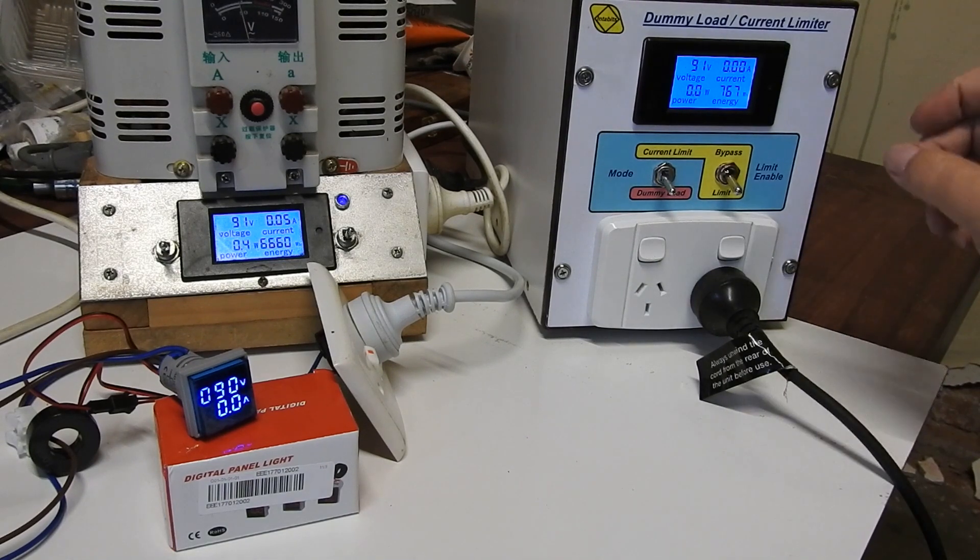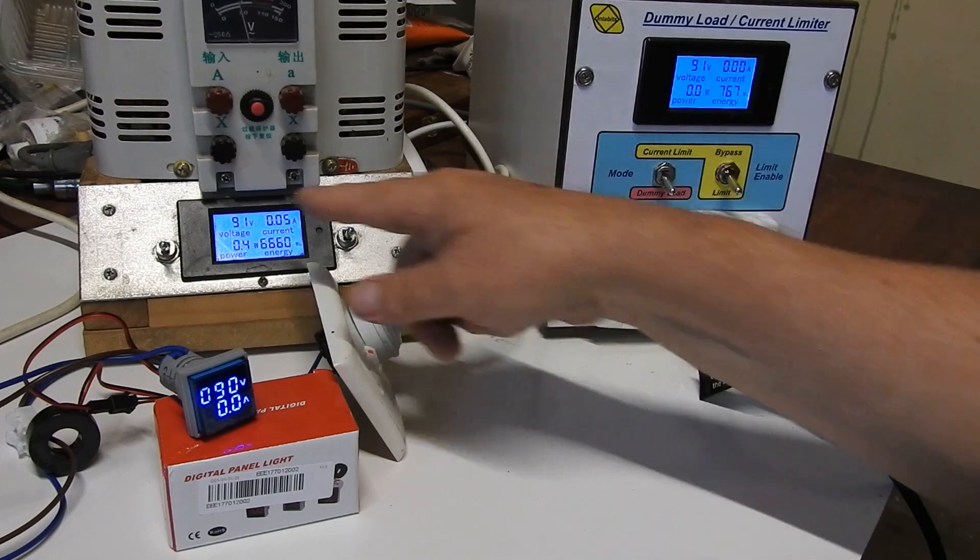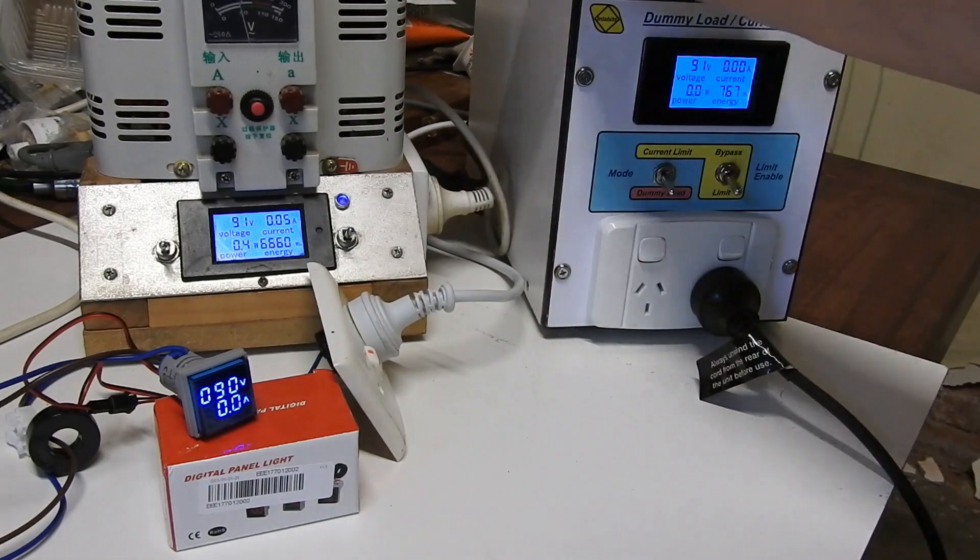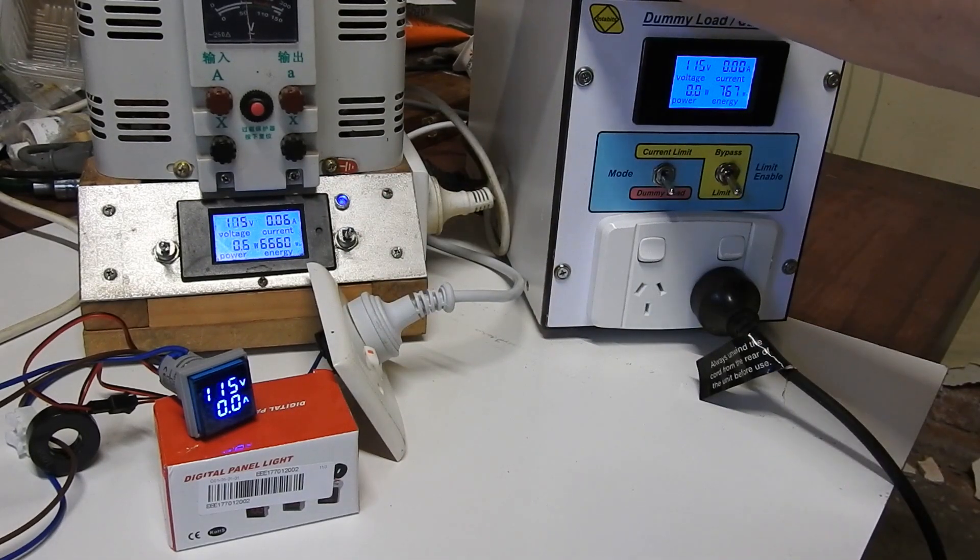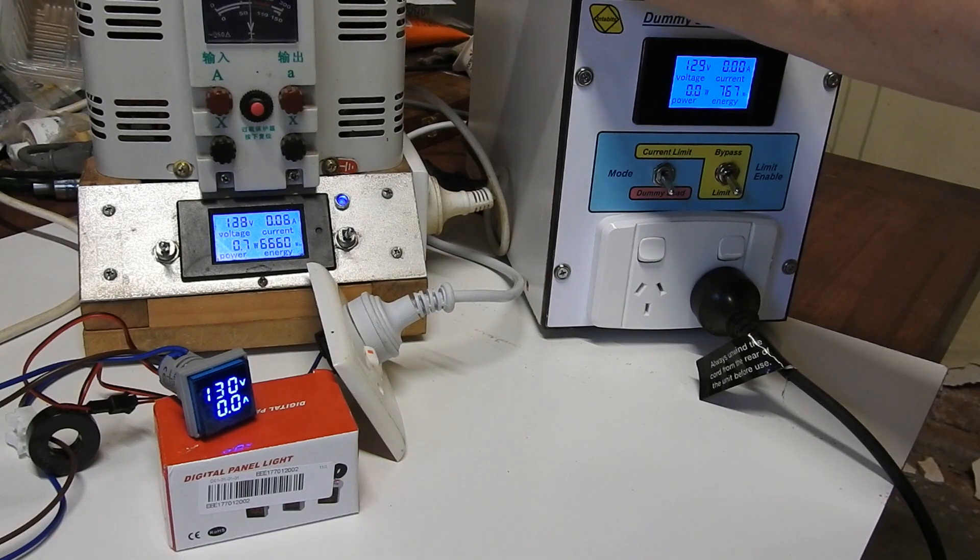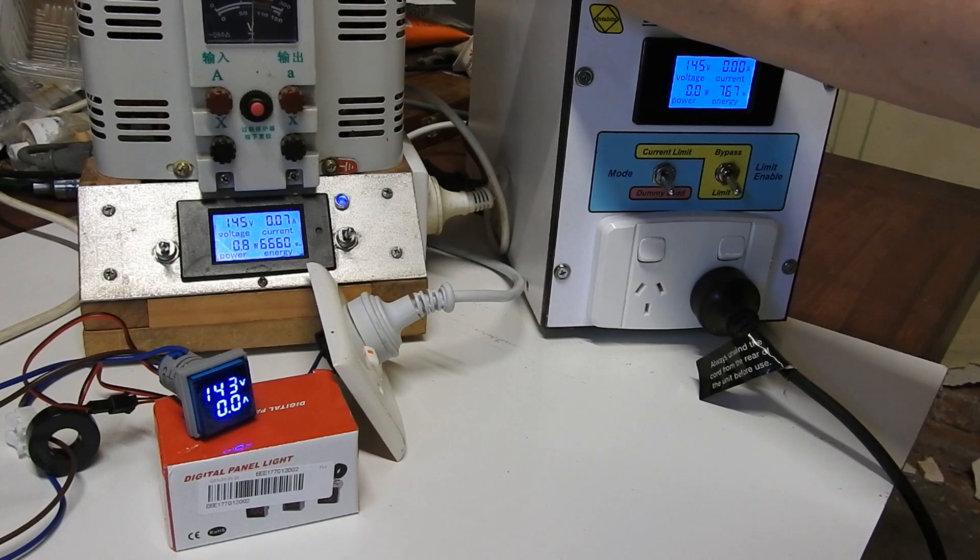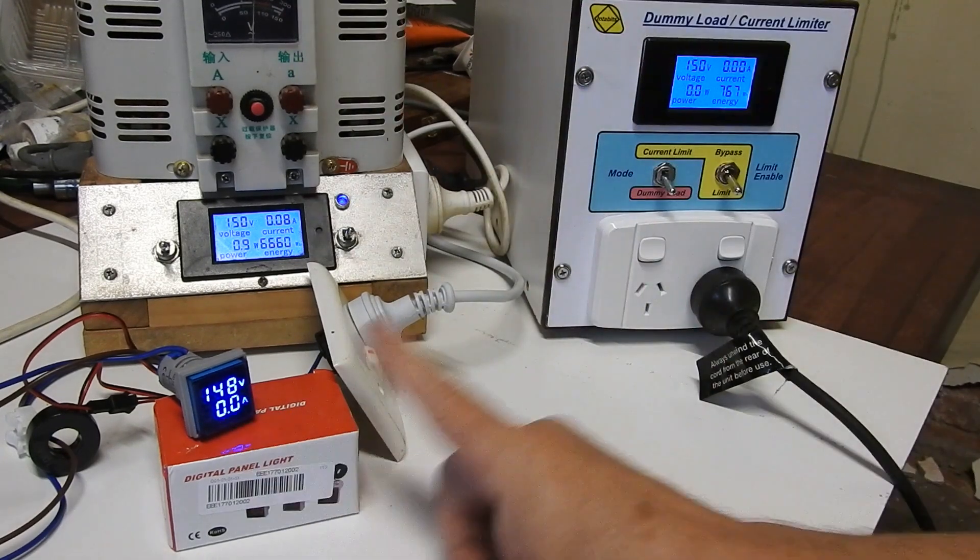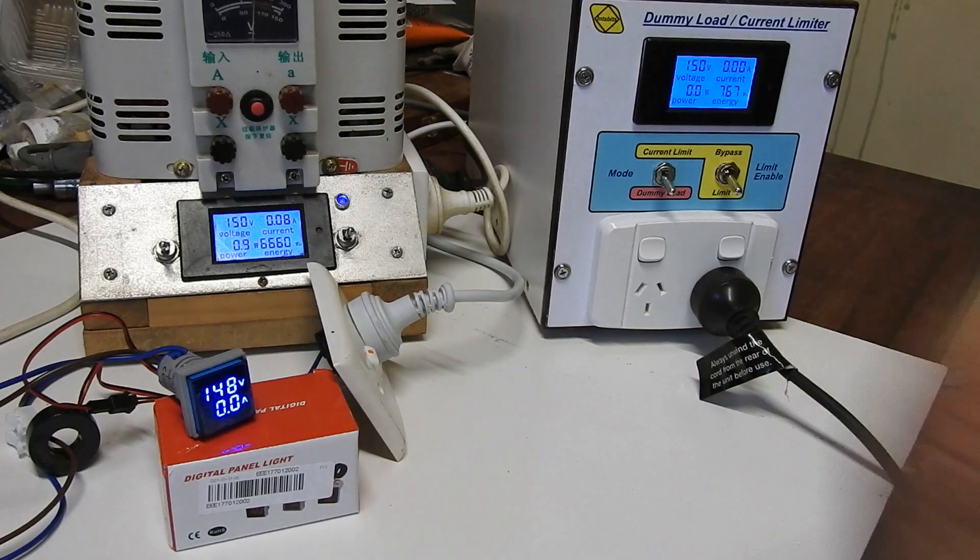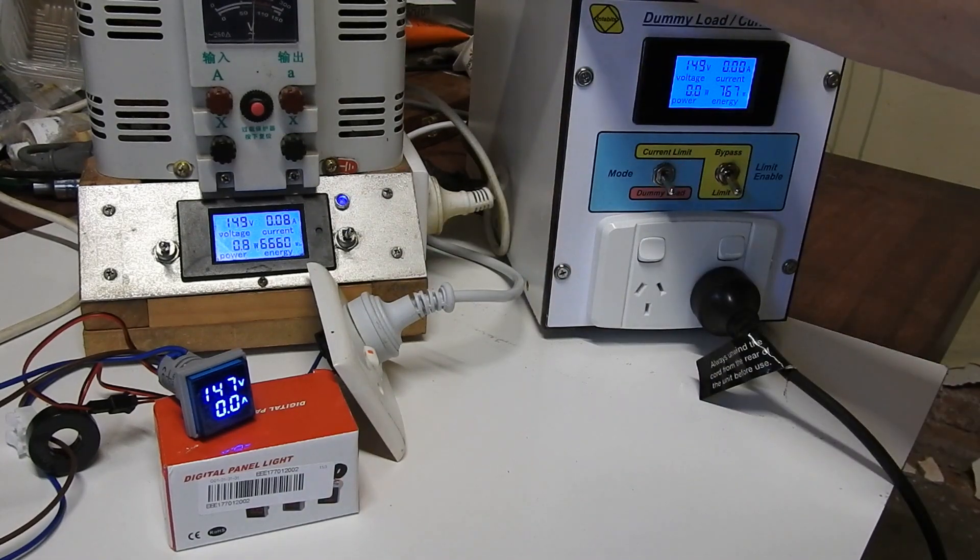Disconnect the load. And 91, 91, 90, pretty close. Go up a bit higher. 150 volts from the Variac. 149, 150. So the voltage is a tad low. The reading. So let's go all the way to 240.